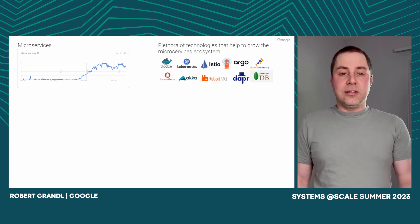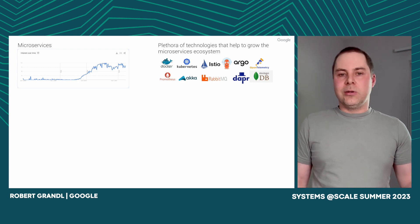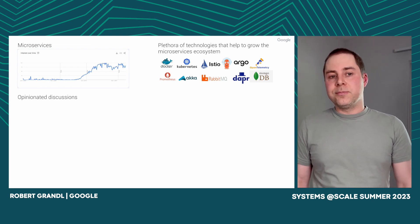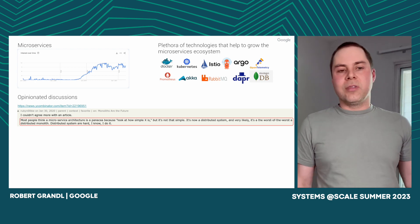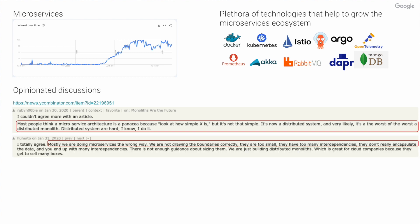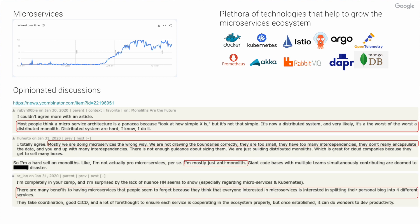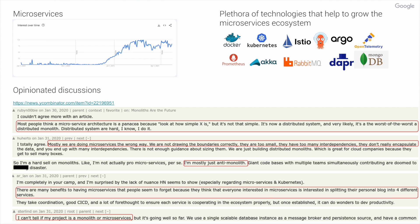At the same time, the internet is full of very opinionated and contradictory opinions about whether you should use monoliths or microservices-based architectures. For example, looking at a random Reddit post: someone says microservice architecture is a panacea because it's simple, but at the same time it's the worst of a distributed monolith. Another person believes we're doing microservices the wrong way because we're not drawing the boundaries correctly. Another person just hates monoliths, and someone else isn't even sure whether their application is a monolith or microservices.